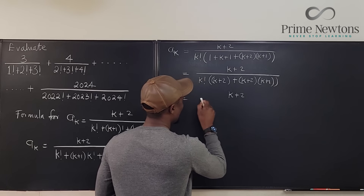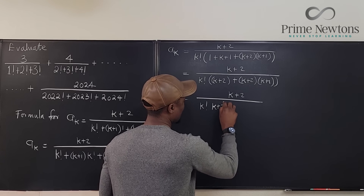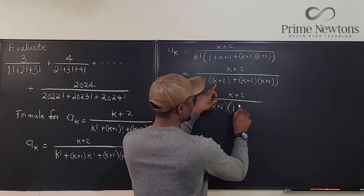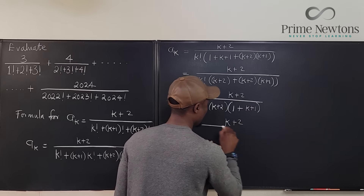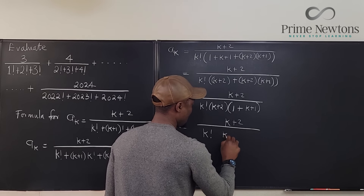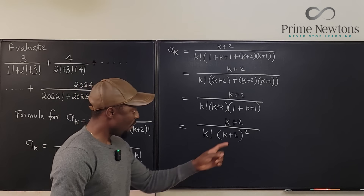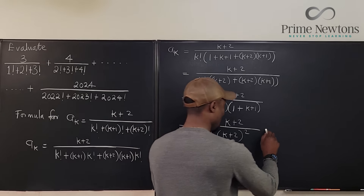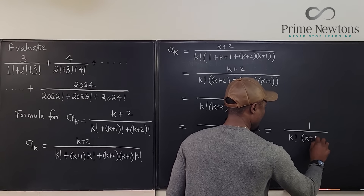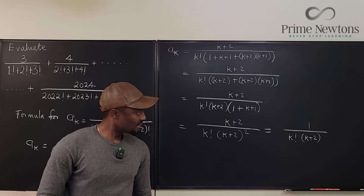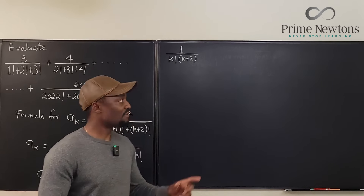So it cleans up to become k plus two over k factorial times k plus two squared. Now k plus two can cancel one of these k plus twos, so what we have becomes one over k factorial times k plus two times k plus two — that is, one over k factorial times k plus two squared. We've done a very good job so far.